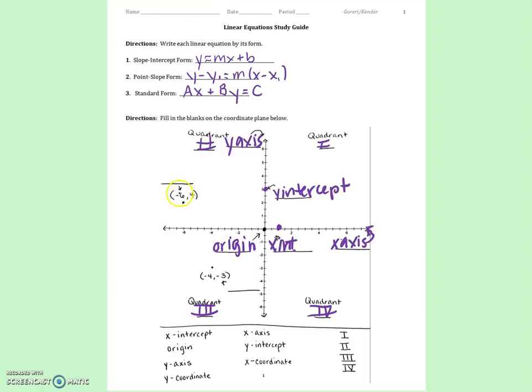In a coordinate, the first number that it's pointing to is an x-coordinate. And the second number that it points to is a y-axis. You should know all these elements on a graph. Let's move on to page 2.